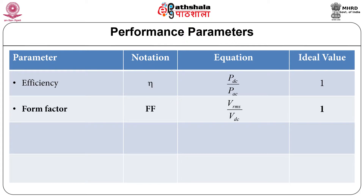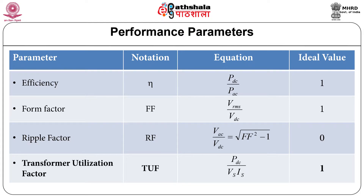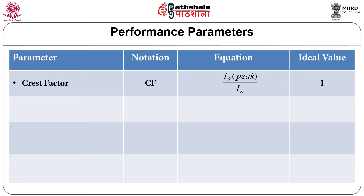The second parameter is form factor, which is the RMS voltage of the output divided by DC voltage of the output. From form factor, one can determine the ripple factor. Transformer utilization factor is the most important performance parameter. The ideal values are shown in this table. Transformer utilization factor determines the size and cost of the transformer. It is the output DC power versus input AC power. The crest factor is mainly dependent on the peak value of input current or source current.